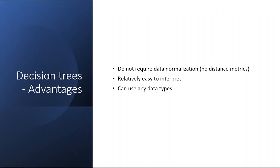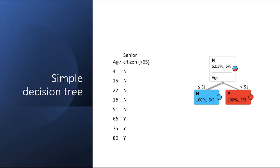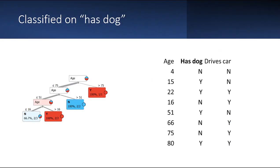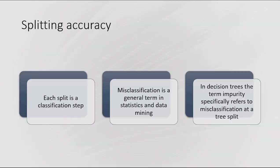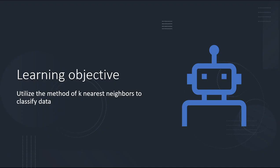Decision trees have the advantage in that they're not really mathematically picky — you can basically throw any input variables in them. You don't have to normalize or use symmetric distributions. They're relatively easy to interpret because you get a visual output, and they are a classification method. But another classification method is the next one, which is one of my favorites: k-nearest neighbors.